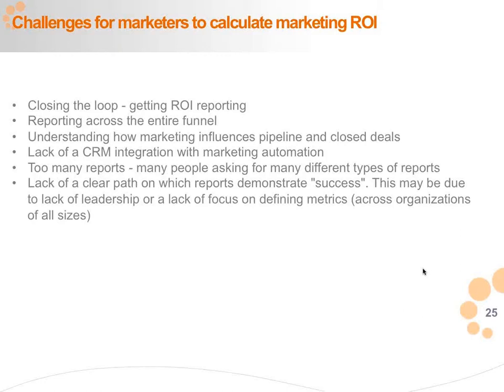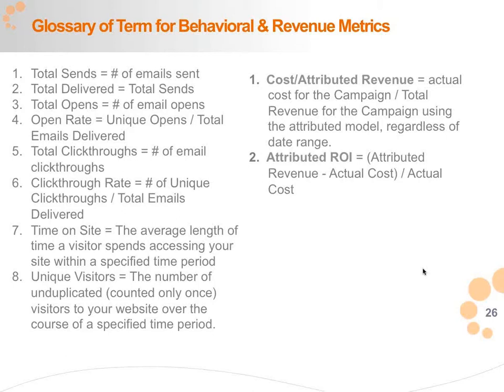I remember one program where they did an A/B test and people were really excited because one email was getting a massively improved click-through rate than another — except that we looked and found that the click-through rate was actually people clicking on the unsubscribe button. So you have to figure out what people are actually looking at and why. That's where a little bit of information is dangerous out of context. It's really important to look at the right KPIs for your measurement strategy. We'll quickly go through a glossary of behavioral and revenue metrics that are important for measurement. We are not saying behavioral metrics are not important, but they're just a starting point. Ultimately you have to do closed-loop marketing where you're measuring your revenue and attributing it to the right channels.